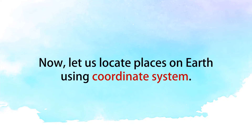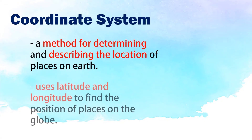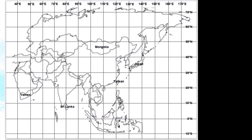Now, let us locate places on Earth using the Coordinate System. The Coordinate System is a method for determining and describing the location of places on Earth. It uses latitude and longitude to find the position of places on the globe.